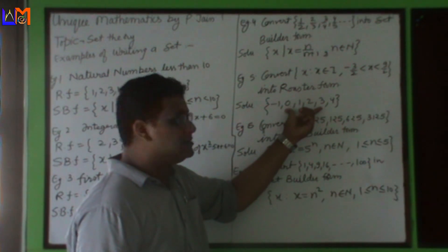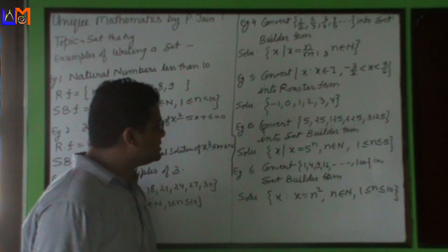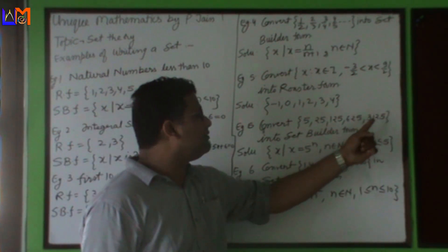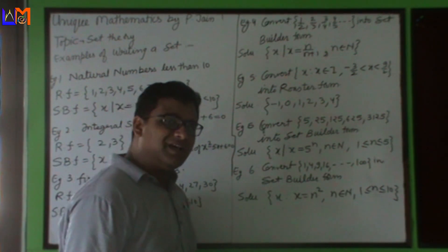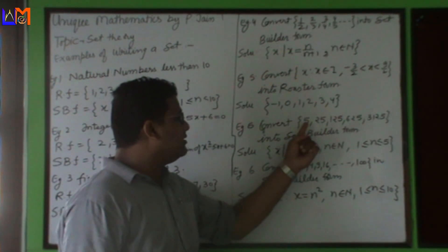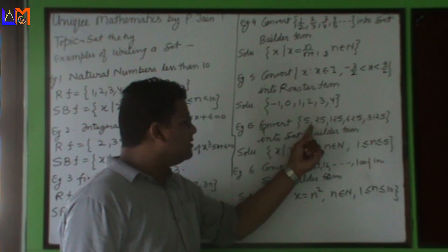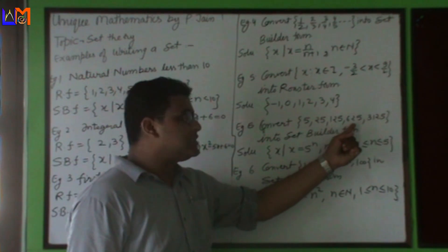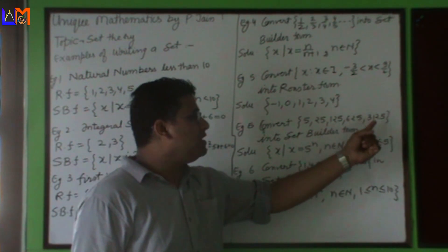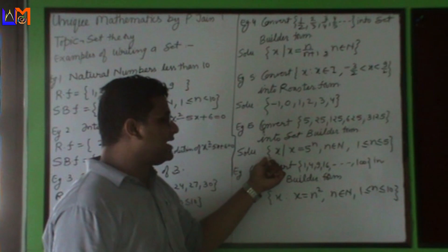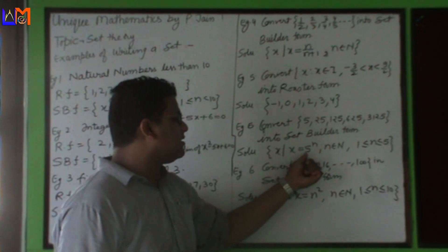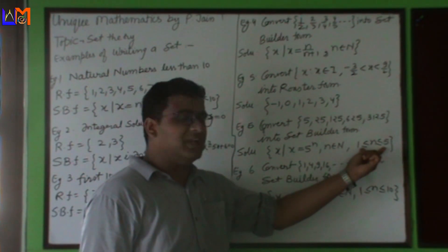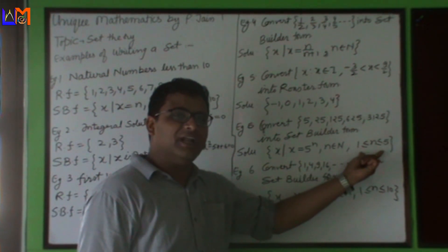Example 6: convert this roster form - 5, 25, 125, 625, 3125 - into set builder form. Here we can very easily see that 5 is 5 power 1, 25 is 5 power 2, 125 is 5 power 3, 625 is 5 power 4, 3125 is 5 power 5. So we can write: x such that x equals 5 power n, where n is a natural number that lies between 1 and 5, including 1 and 5.